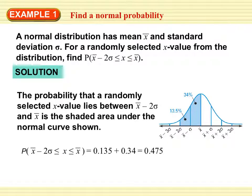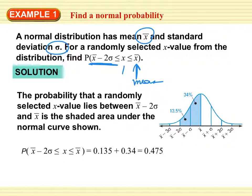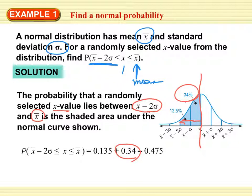A normal distribution has a mean x-bar and a standard deviation sigma. For a randomly selected x value from the distribution, find two standard deviations to the left of x between that and the mean. So this right here is your mean. We want to find two standard deviations to the left — one, two standard deviations. The probability that a randomly selected x value lies between x-bar minus two sigma and x-bar is 0.34 plus 0.135 for the shaded area under the normal curve.